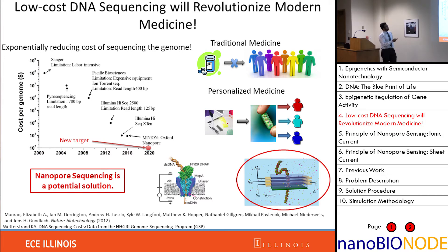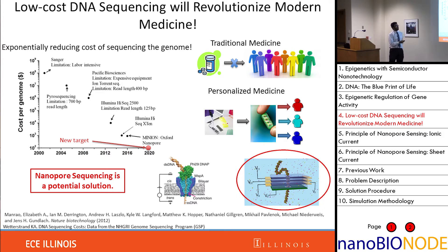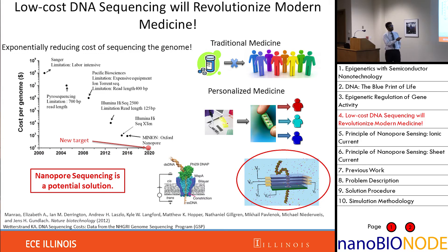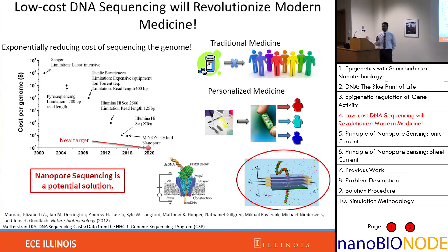We want some sort of integration of these genomic information with all these devices, and for that we typically want to reduce the cost to about a hundred dollars. Currently it's somewhere on the order of a thousand dollars and still in beta testing. If we can achieve this very low-cost sequencing, we can have very specific treatments depending on the person's genomic sequence, for which nanopore sequencing is the key.